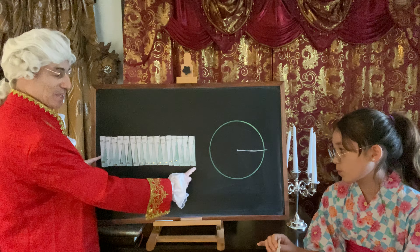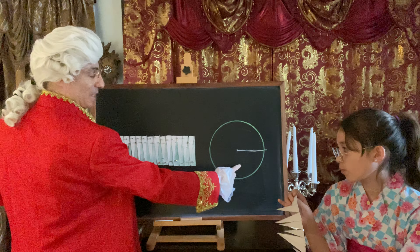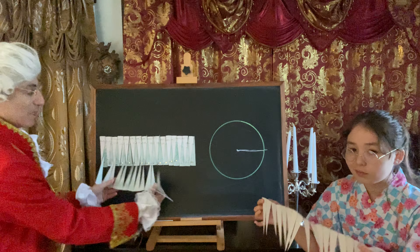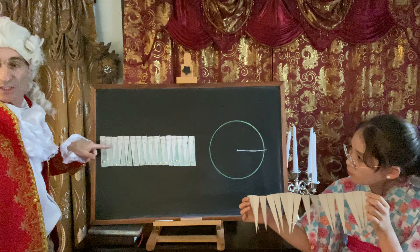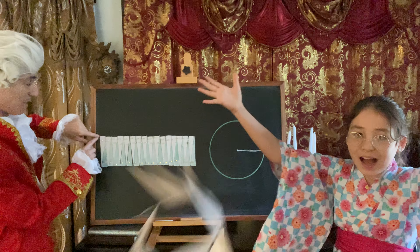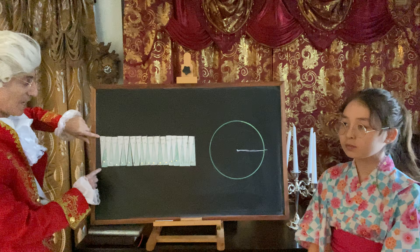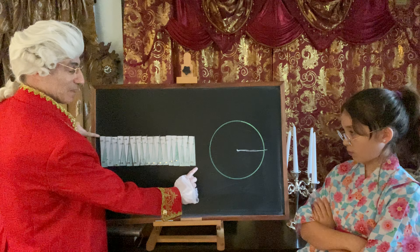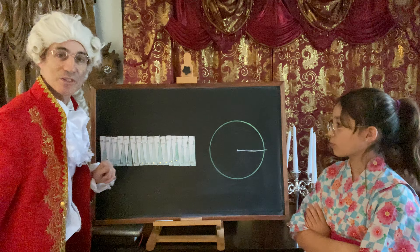And now we have the answer to our area. This circle right here has been transformed into this rectangle. And now all we need to do is find out the distance of the height and multiply it by the base, and we've solved the area of a circle.